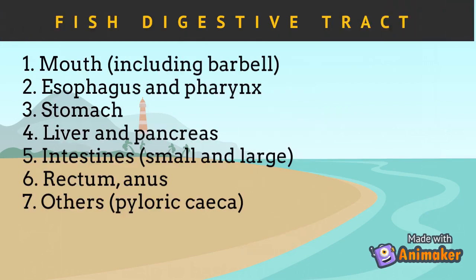Once food is ingested by the fish, it will pass through different parts of the digestive tract. First, it is ingested by the mouth, passing through the esophagus and pharynx. Some time will be spent in the stomach, where the liver and pancreas release enzymes to speed up digestion. After that, the partially digested food passes through the intestines — small and large — where final digestion and nutrient absorption take place. Undigested food or feces is released to the outside environment through the rectum and anus.